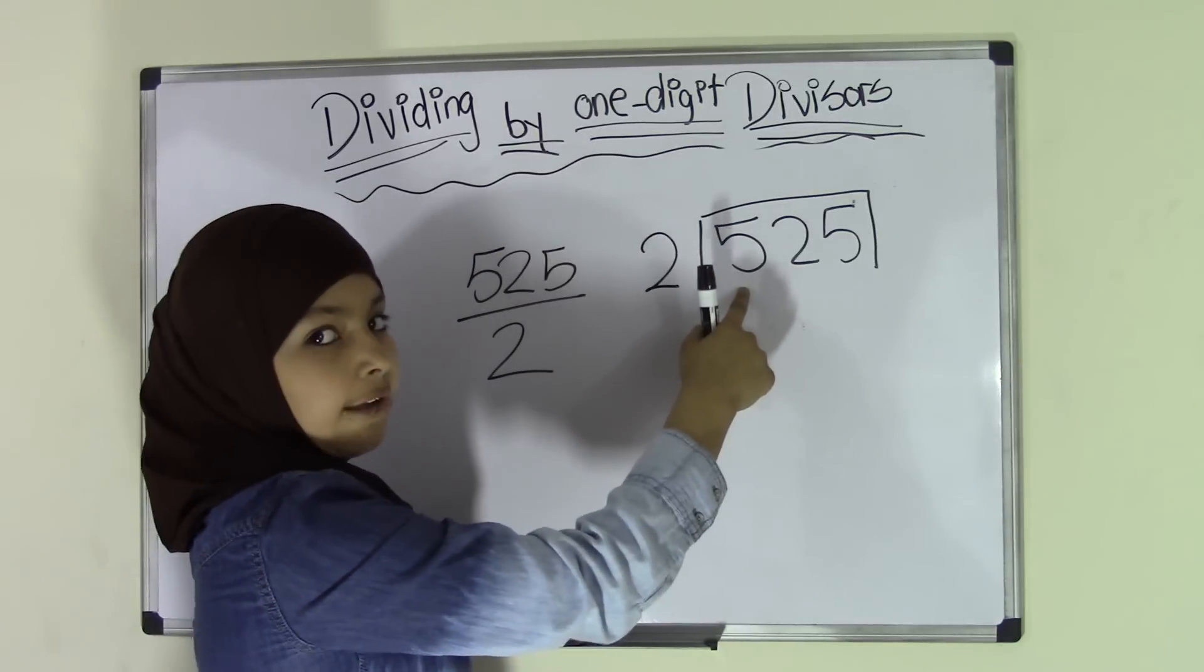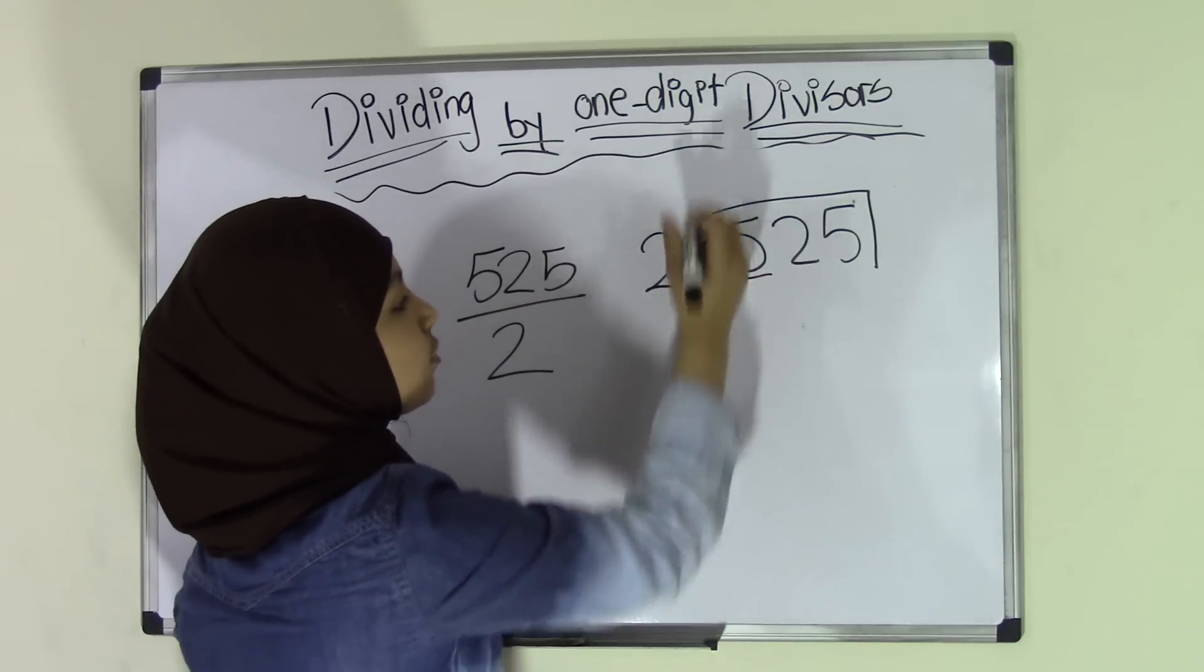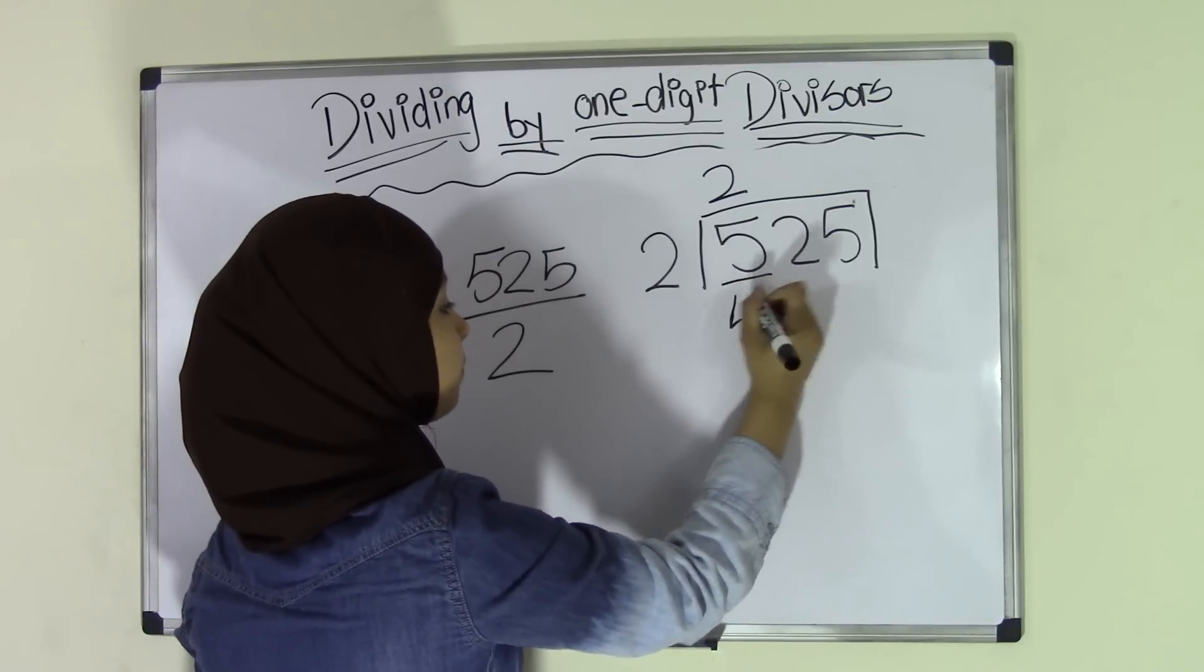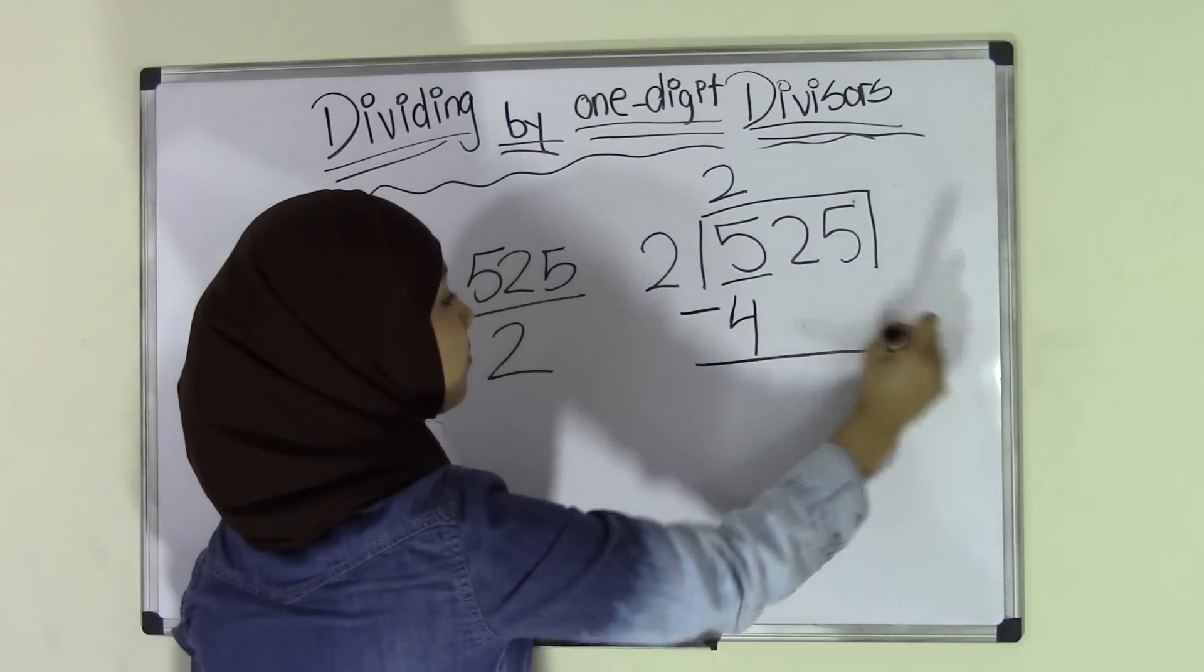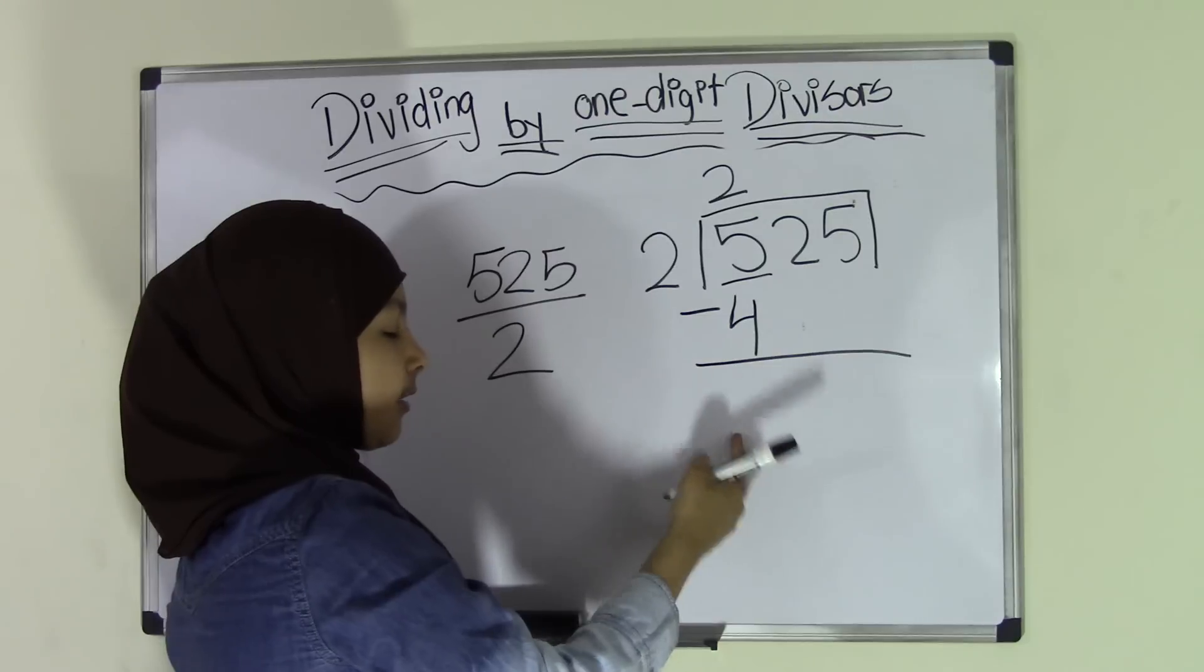How many times does 2 go into 5? So the first number is 5. So 2 times 2 is 4. That means 5 minus 4 would give us a difference of 1.